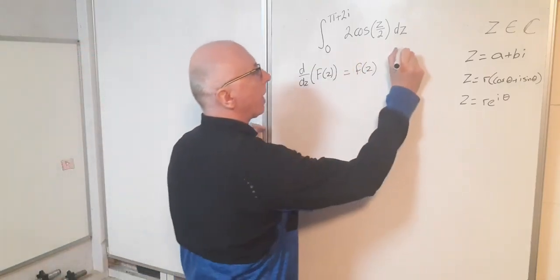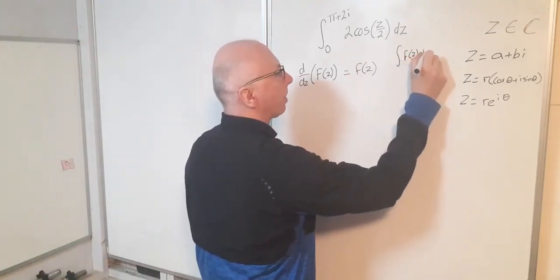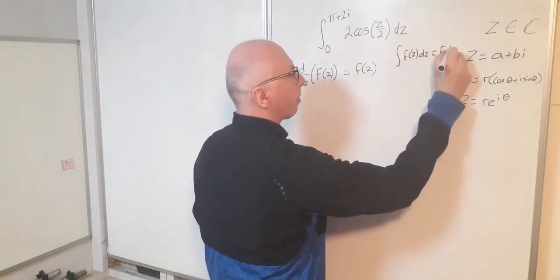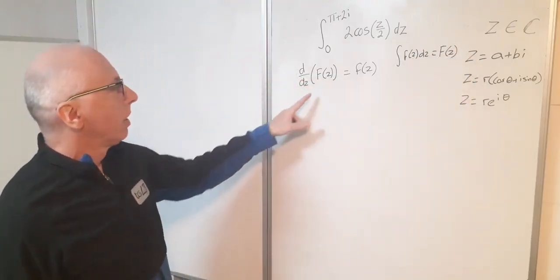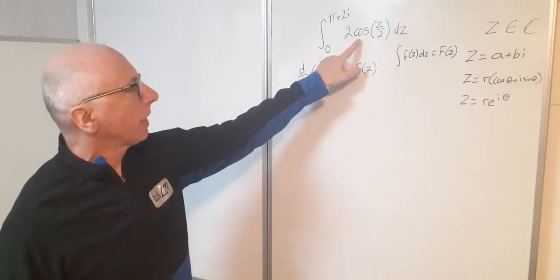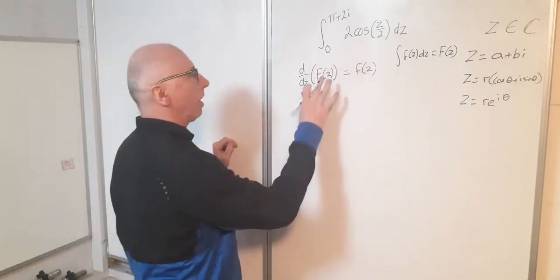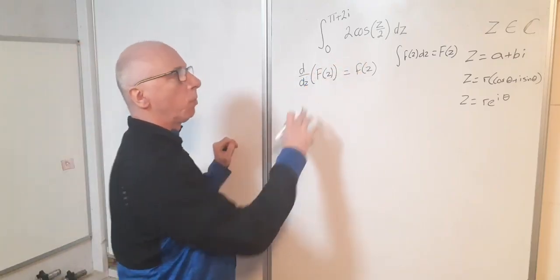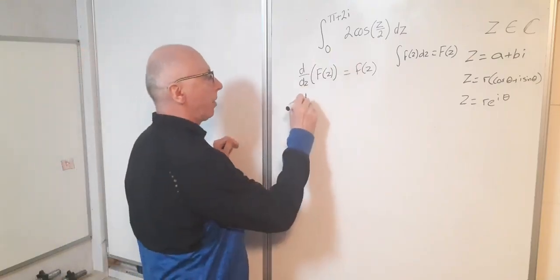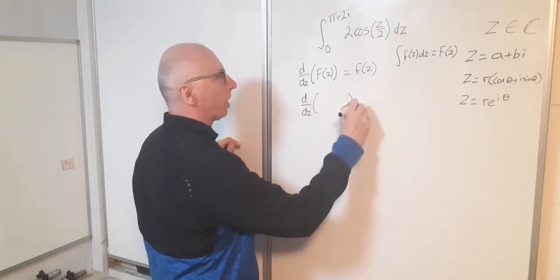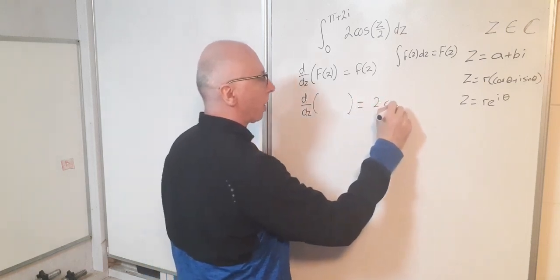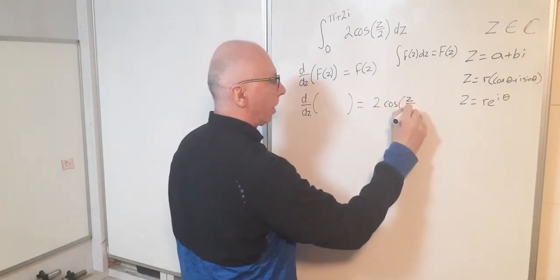So what I'm looking at is the integral of f(z) dz equals capital F(z). So now I need to take the derivative of something to get this as my answer, and this input here will be the result of my integral. So I want the derivative with respect to z of some function to give me 2 cosine z over 2.